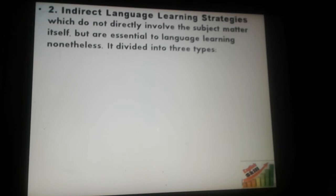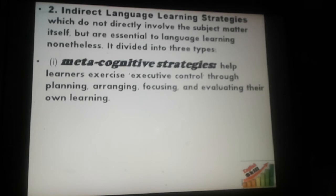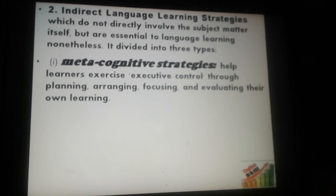The first indirect strategy is metacognitive strategies, which help learners exercise executive control through planning, arranging, focusing, and evaluating their own learning. This strategy helps learners to focus on their learning, evaluate their information, arrange old and new information, and plan for their learning.